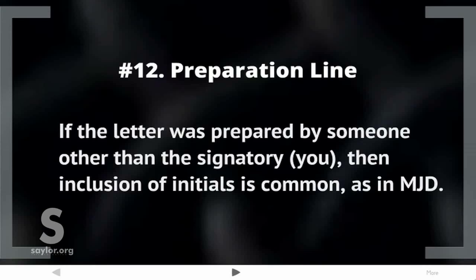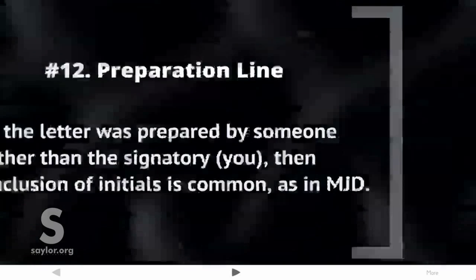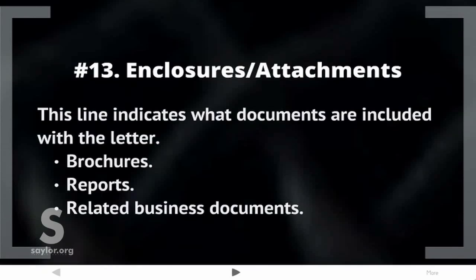Element twelve: Preparation line. If the letter was prepared by someone other than the signatory, the inclusion of initials is common, such as 'VN/JD.' Element thirteen: Enclosures and attachments. This line indicates what documents are included with the letter. Common examples include brochures, reports, and related business documents.